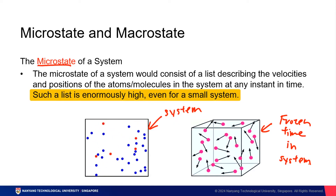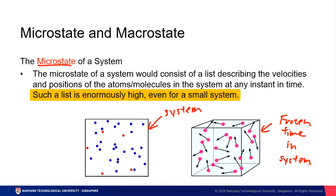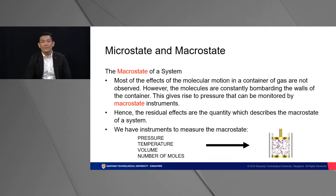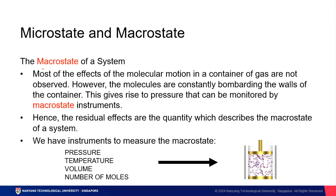Such a list would be really, really large, even for a very small rock or small system. So we know what a microstate is. What is a macrostate? In opposition to things we cannot observe, a macrostate is something we can observe and measure. We can measure the macrostate of a system through multiple instruments — for instance, we can measure a system's pressure, temperature, volume, and number of moles, as opposed to knowing the position of atoms and molecules at any one point in time.